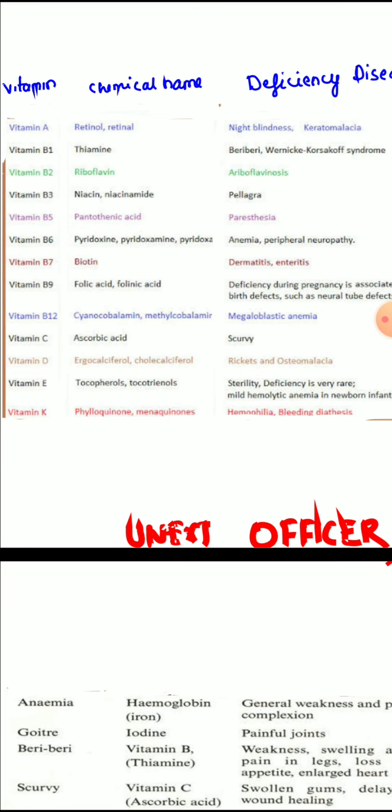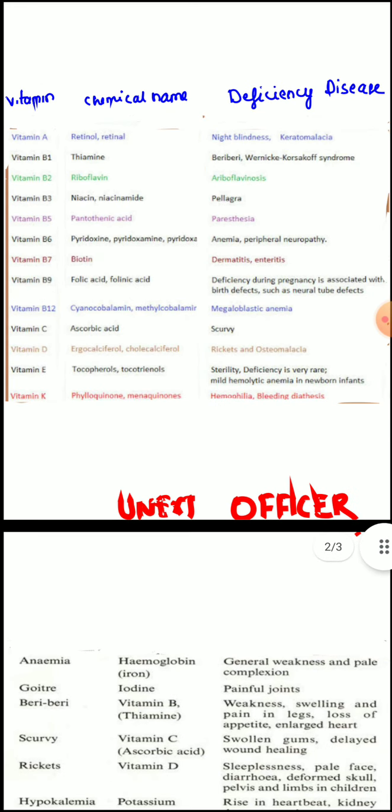Vitamin B9 deficiency or folic acid deficiency causes megaloblastic anemia. It is important to note that folic acid deficiency in pregnancy is associated with a birth defect called neural tube defect, which includes diseases like spina bifida and anencephaly. So it is important to supplement women with folic acid, ideally even before conception. Routinely, pregnant women are given 0.5 mg of folic acid daily. Women on anti-seizure drugs or with a previous history of neural tube defects are given a higher dose of 5 mg of folic acid.